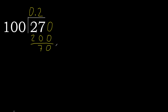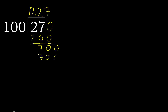Next. There is no number, therefore complete. Always complete with 0. Here: 0 point, 0 point. Ok, 700. 100 multiplied by 7 is 700. Subtract: 0.